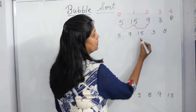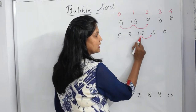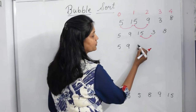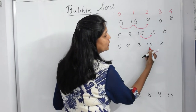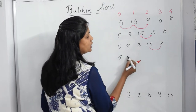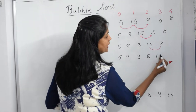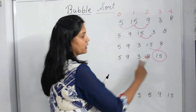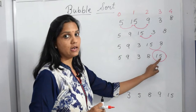Next, compare the third element with the fourth element. Is 15 greater than 3? Yes — so swap it: 5, 9, 3, 15 and 8. Then compare these two: is 15 greater than 8? Yes — so the new array becomes 5, 9, 3, 8 and 15. So using bubble sort, after the first pass, we get the highest element in the last position.